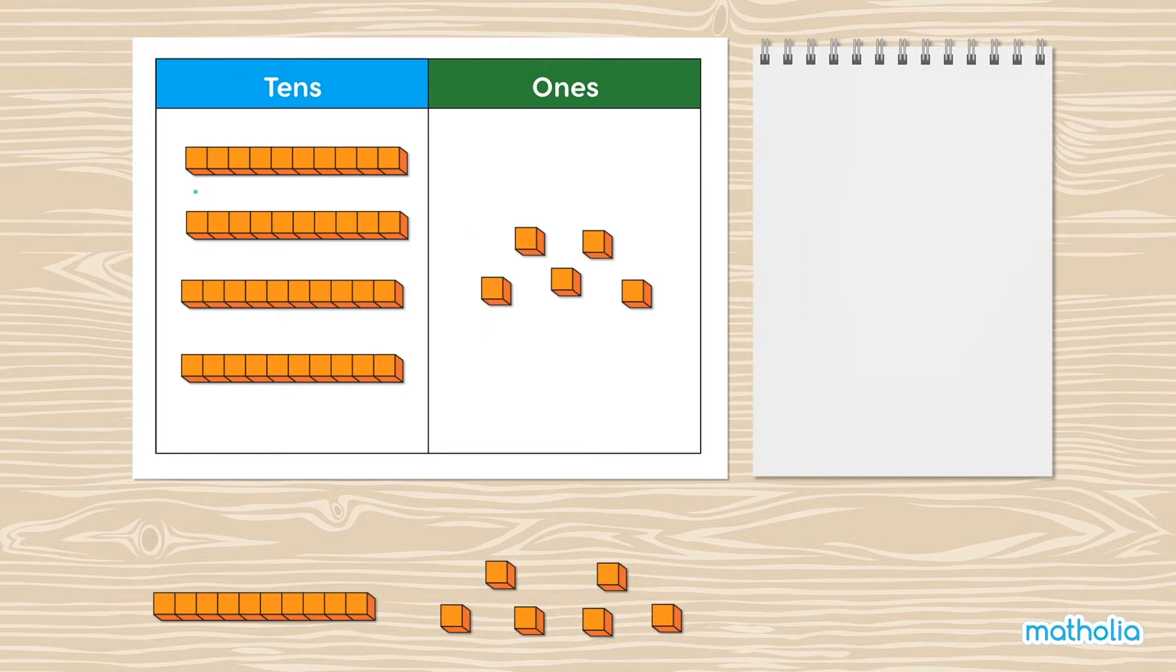We have 1, 2, 3, 4 tens, and 1, 2, 3, 4, 5 ones. Write 45 here.